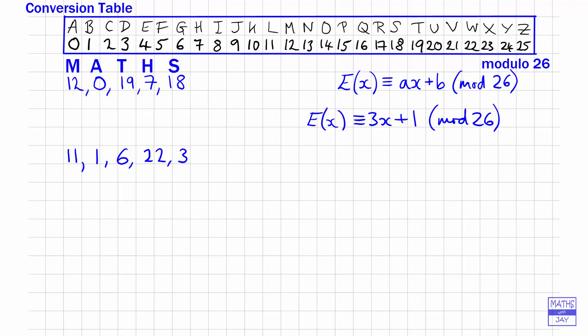So we've enciphered our original word. If we use the conversion table to write this back, let's see what it would be: 11 is L, 1 is B, 6 is G, 22 is W, and 3 is D.